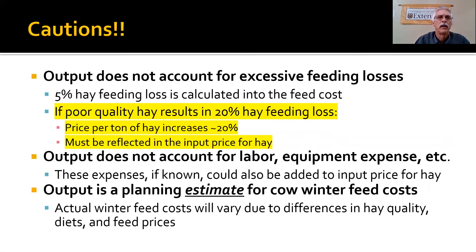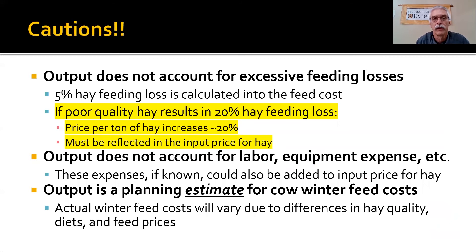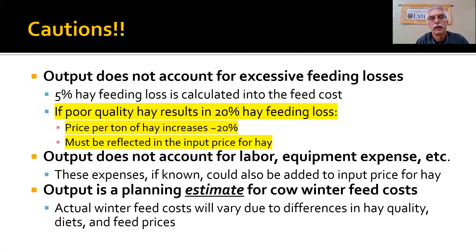A couple of cautions: the output does not account for excessive feed loss. I put a 5% feeding loss into these rations, but if poor quality hay results in a 20% hay feeding loss, I have to reflect that cost somewhere. The most likely way to do that is to increase the input price for hay to account for that loss — going up to about a 20% feed loss increases my cost per ton of hay by about 20%. That can be accounted for by adjusting the input price.